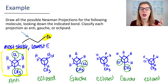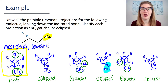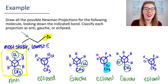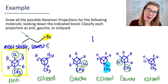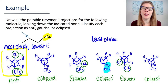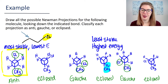Your eclipsed conformation, where the two groups are as close to each other as they can possibly get, is going to be your least stable conformation. Least stable means highest energy.